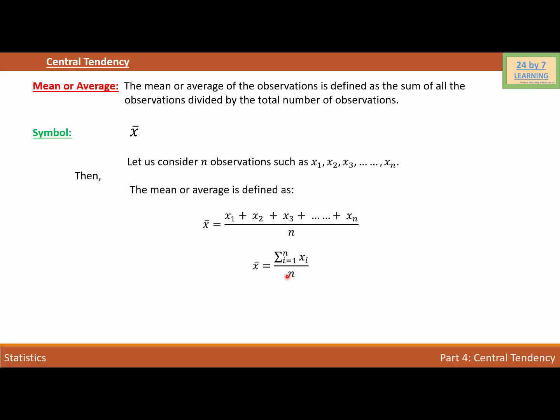In other words, we can say that the mean or the average of any given observation is defined as the sum of all the observations divided by the total number that we are trying to find.